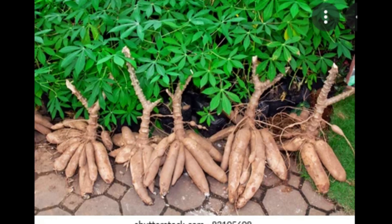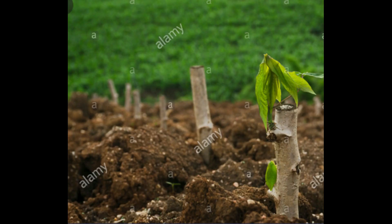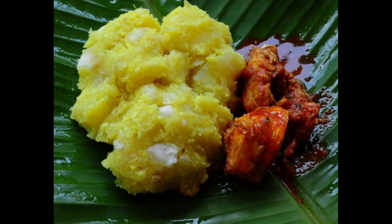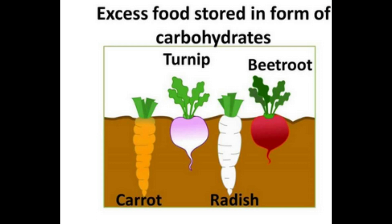Now let's observe a tapioca plant. What about tapioca — is it a root or a stem? Yes, of course it's a root. We never use the tapioca root to plant or produce new plantlets — we always use stem cuttings for that. Tapioca stores its excess food in its roots, so the roots bulge or swell due to excessive food storage. It is therefore called a storage root.